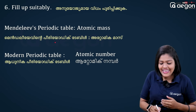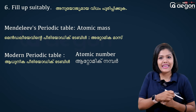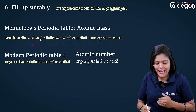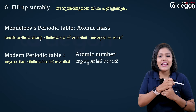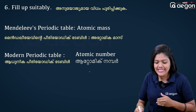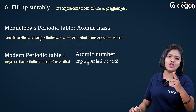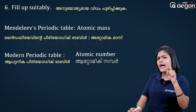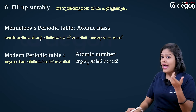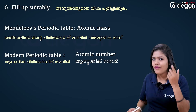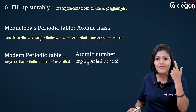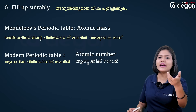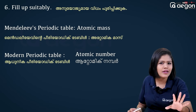Highest electronegativity: Fluorine. Lowest electronegativity: Francium. Highest electronegativity is Fluorine — this is very important to remember.